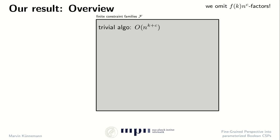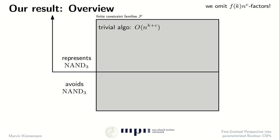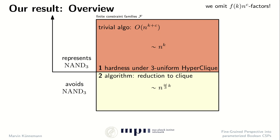Here I give an overview of the complexity landscape — the space of all finite constraint families f. All of these problems can be solved in time n to the k. We divide the landscape into two parts: one for families representing the ternary NAND and the other for those that do not represent the ternary NAND — we say they avoid NAND-3. What we will show is that this n to the k running time is essentially best possible under the three-uniform hyperclique assumption, and for the other case, all function families that avoid this ternary NAND can actually be solved faster, via a reduction to clique.